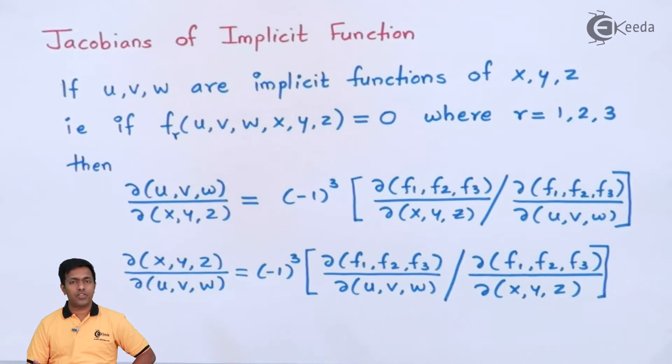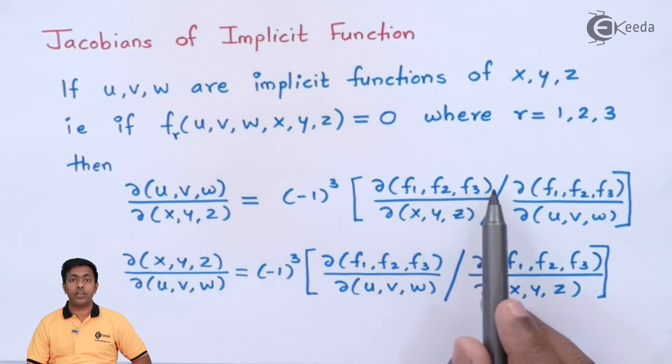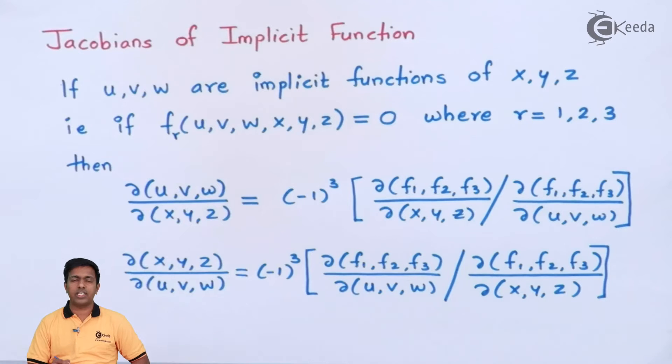We will call the first function as f1, second as f2, and third is f3. So we will find out the Jacobian of f1, f2, f3 with respect to x, y, z by using the definition of Jacobian. And whatever answer that will come, we will divide that answer by the Jacobian of f1, f2, f3 with respect to u, v, w. So this is the formula to get the Jacobian of u, v, w with respect to x, y, z.